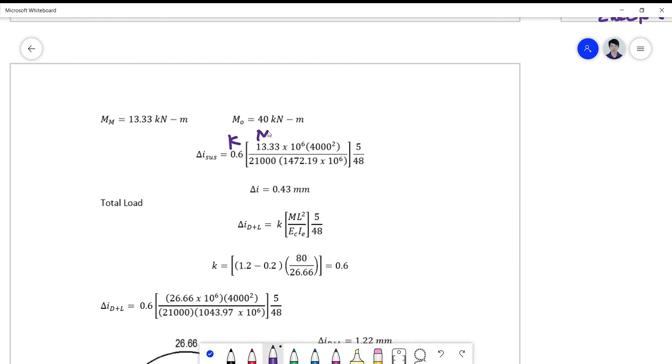For your delta sustained, you just plug in. This is your K, this is your MA sustained, this is your L squared, this is your 5 over 48 EC IE for sustained loads. So you get 0.43 millimeters.